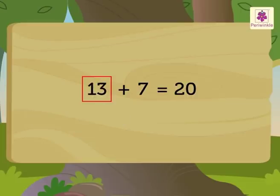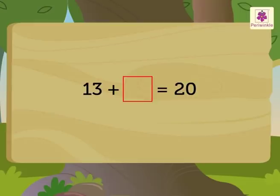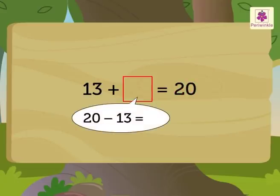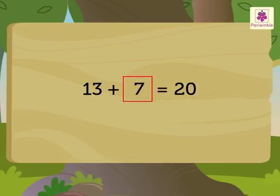Now, if only the addend 13 and the sum 20 is given, we subtract 13 from 20 to get 7 — the missing addend.